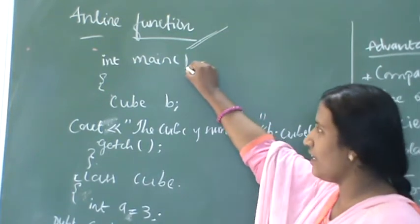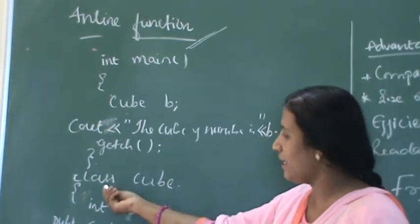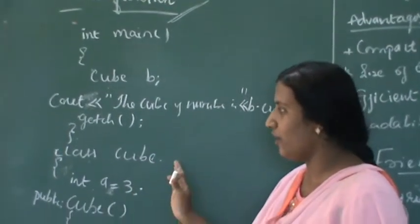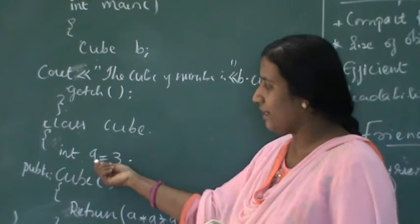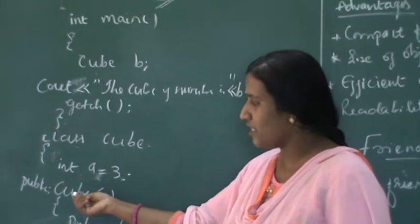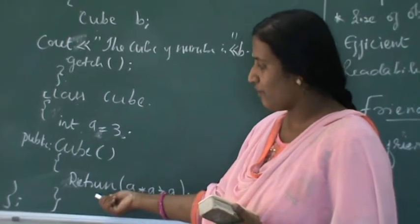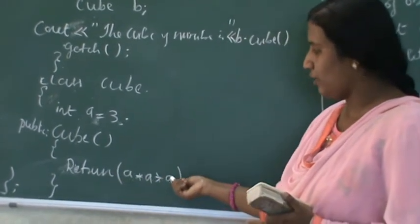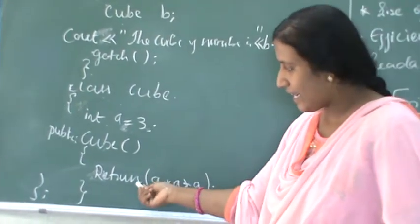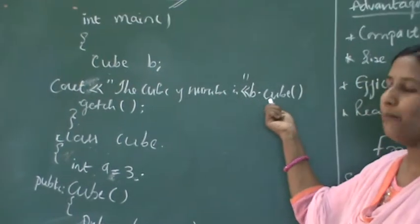For example, generally what we do is write the main function. Here we have used a class called cube, with A equals 3 — this is a program to find the cube of a number. I am initializing A to 3. Here I am writing the member function of this class cube: A into A into A, which multiplies the number. This variable is created whenever the function is called, and we are calling the function from the main function.